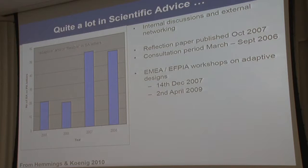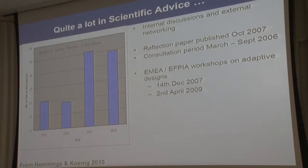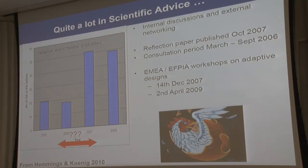I simply put in the keywords 'adaptive' and 'flexible' in the EMA database where scientific advice letters are saved. There was a clear jump between 2006 and 2007 — from about 19 scientific advice letters mentioning one of these words, up to 51 in 2007. In 2006, a first draft of the reflection paper on adaptive design was published, which inspired many companies to think about and submit proposals on adaptive designs. Though we don't know who came first — the egg or the chicken — maybe those protocols were already on the way and the guidelines followed.